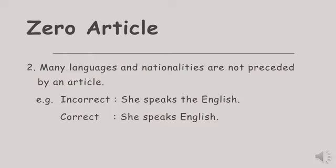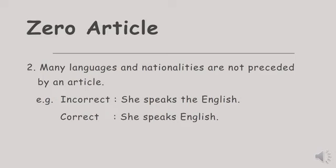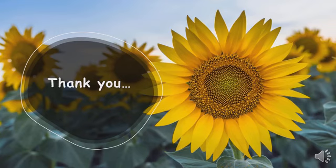Many languages and nationalities are not preceded by an article. Banyak bahasa dan kebangsaan tidak diawali dengan artikel. 'She speaks the English' is incorrect. Kata English yang menunjukkan bahasa cukup diucapkan English saja tanpa artikel. The correct one is 'she speaks English.' Additionally, sports and academic subjects do not need articles. 'She likes to play the badminton' is incorrect. The correct one is 'she likes to play badminton' without any article. That is a brief explanation about article. I hope you understand it and happy studying.